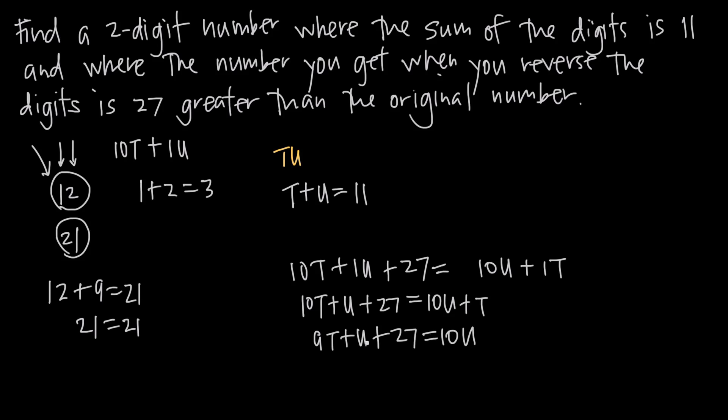When we subtract 1u from both sides, we'll get 9t plus 27 is equal to 9u. Now we can divide through the entire equation by 9.